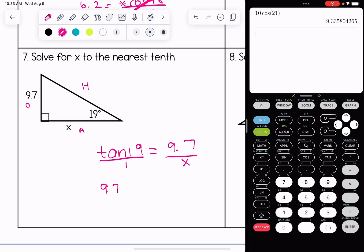So 9.7 divided by the tangent of 19 to the nearest tenth. I get x is 28.2.